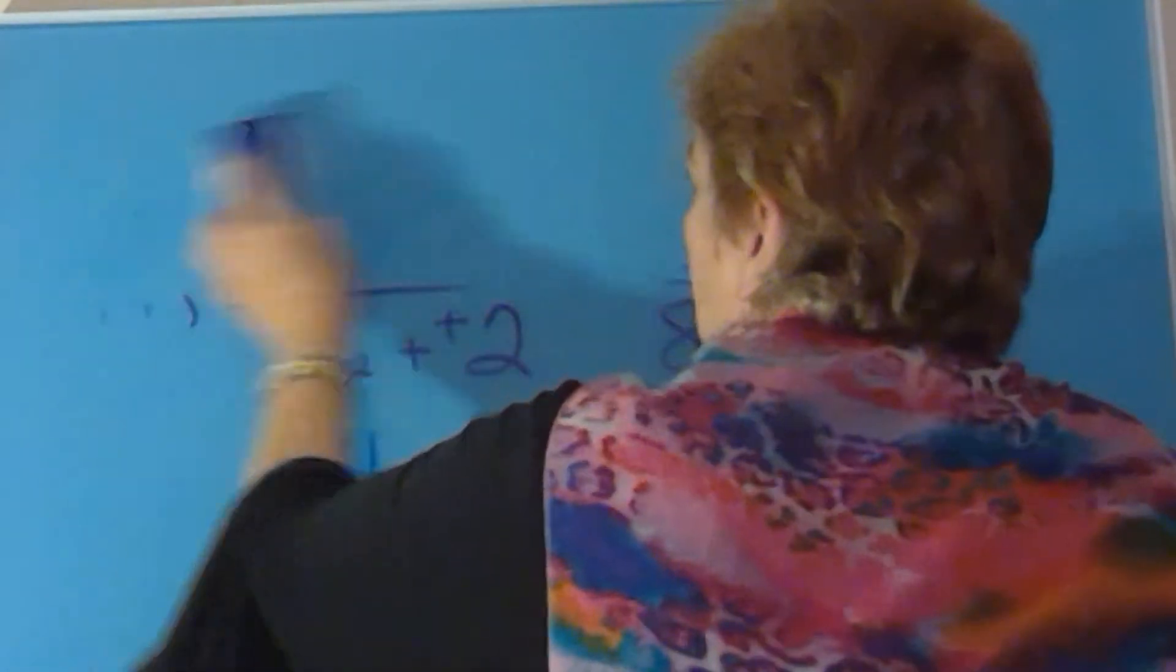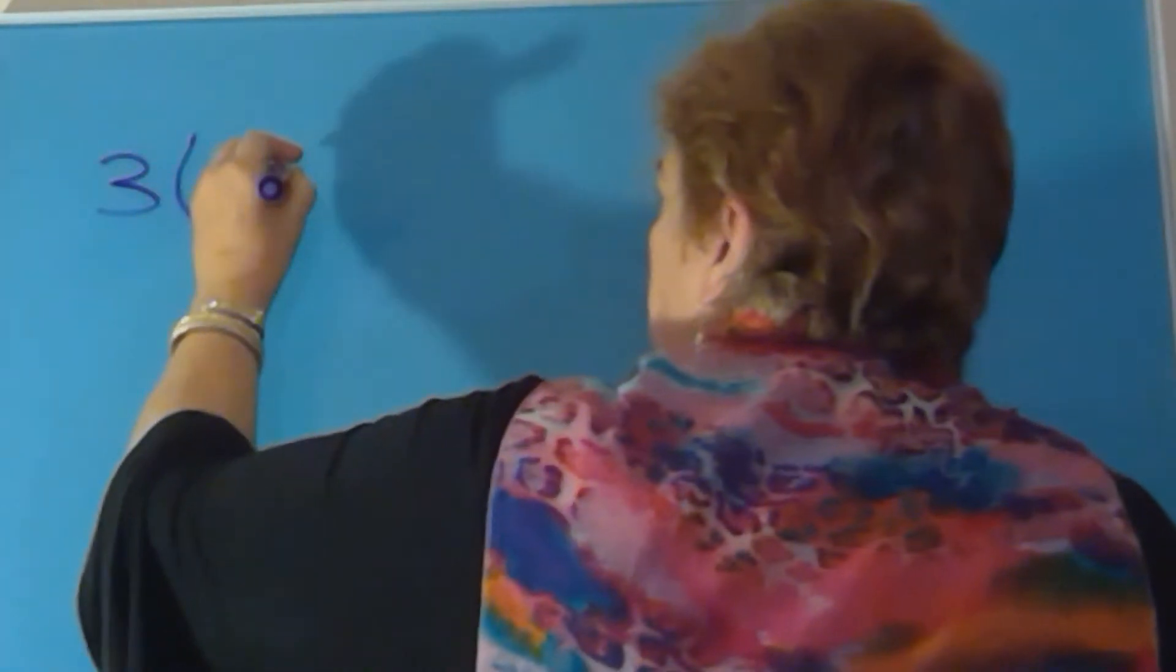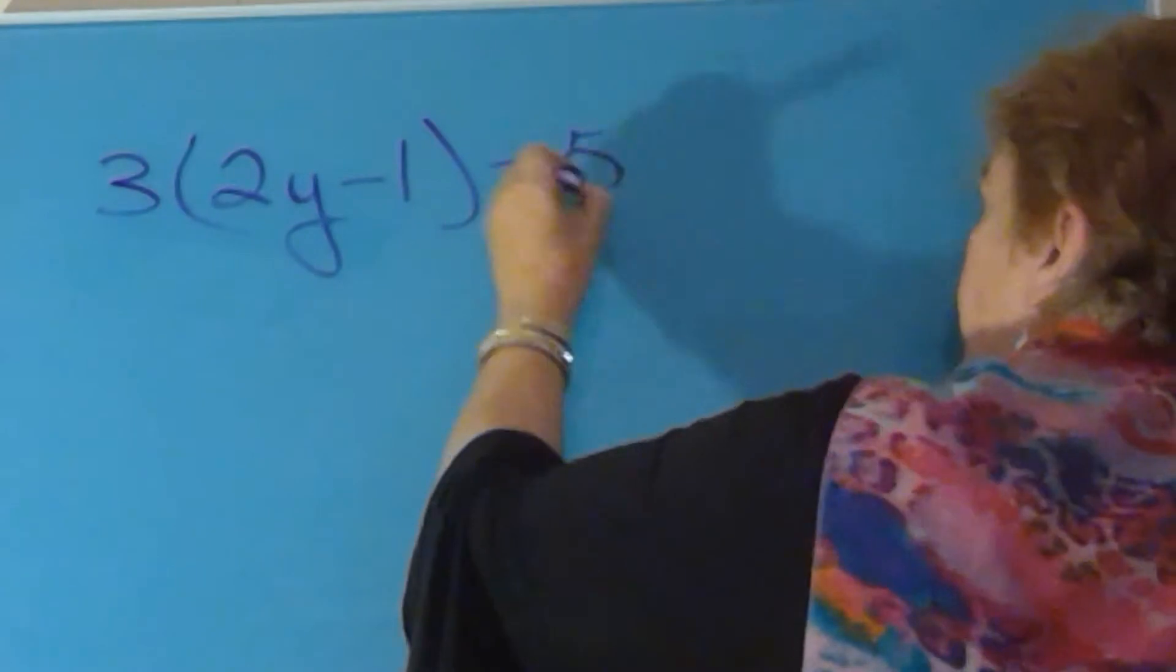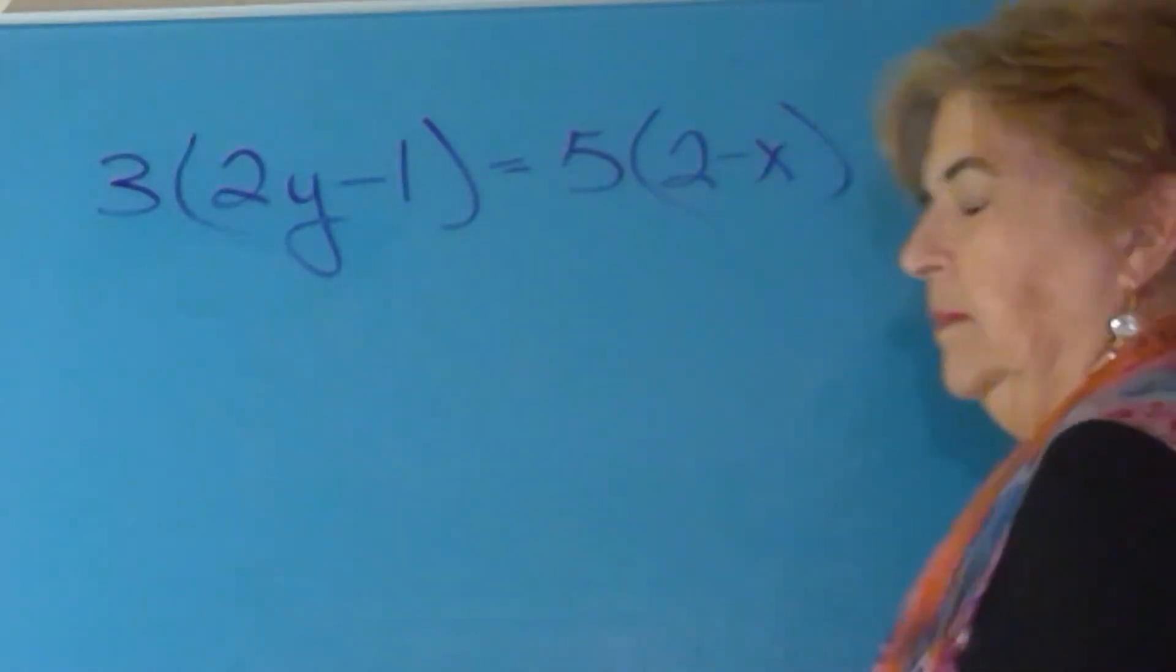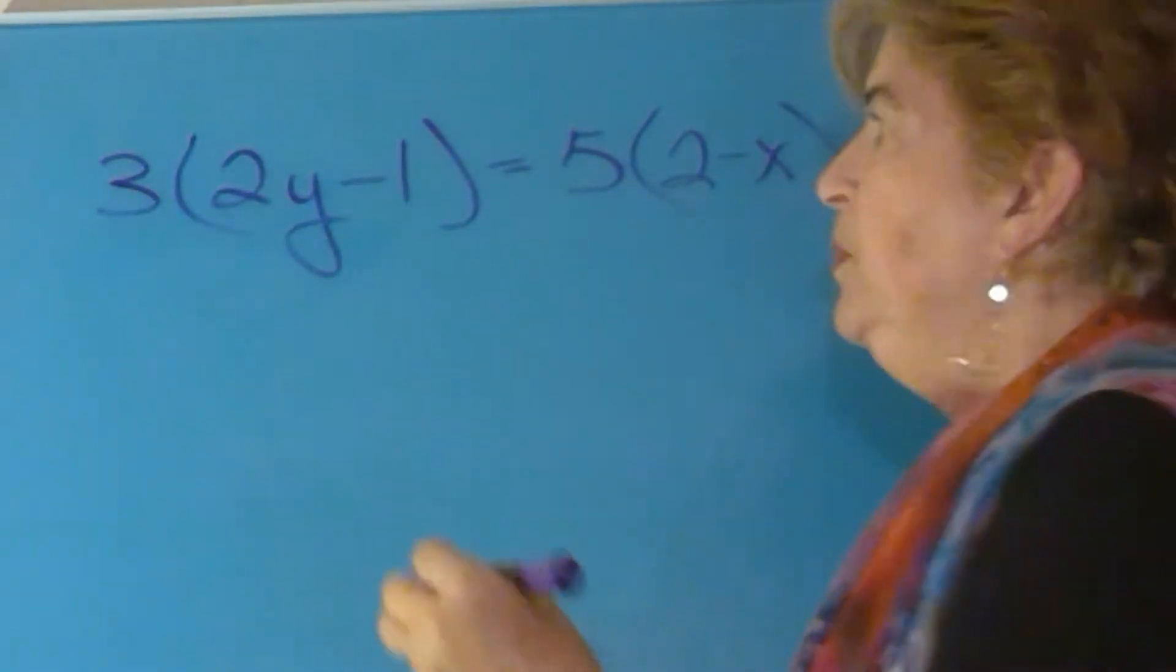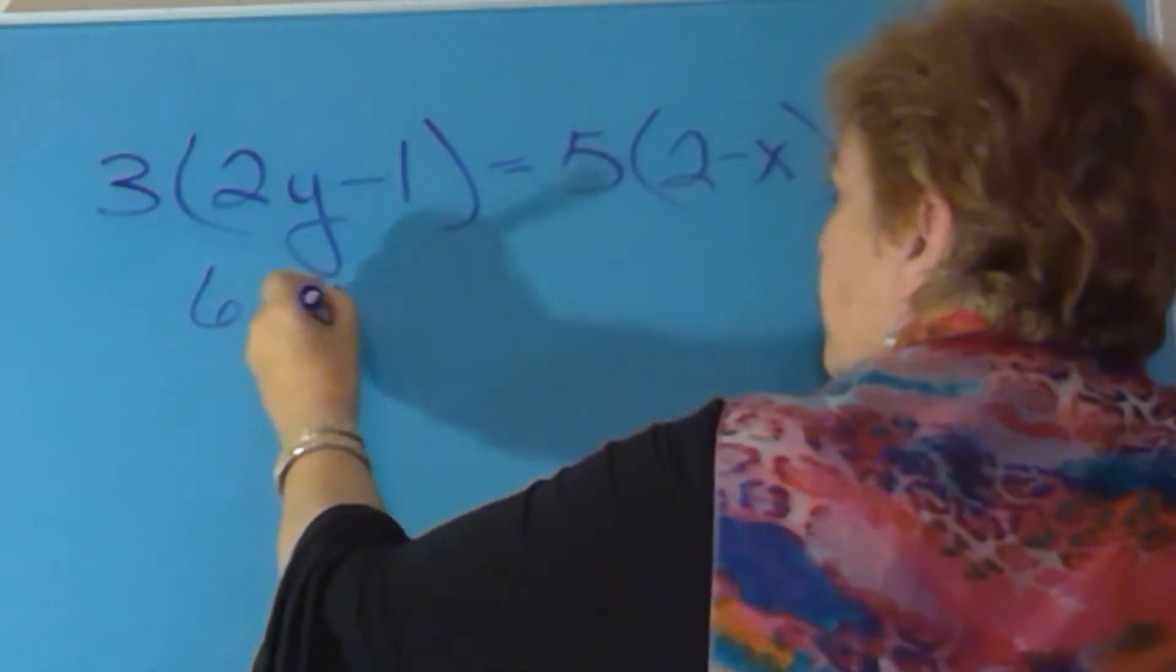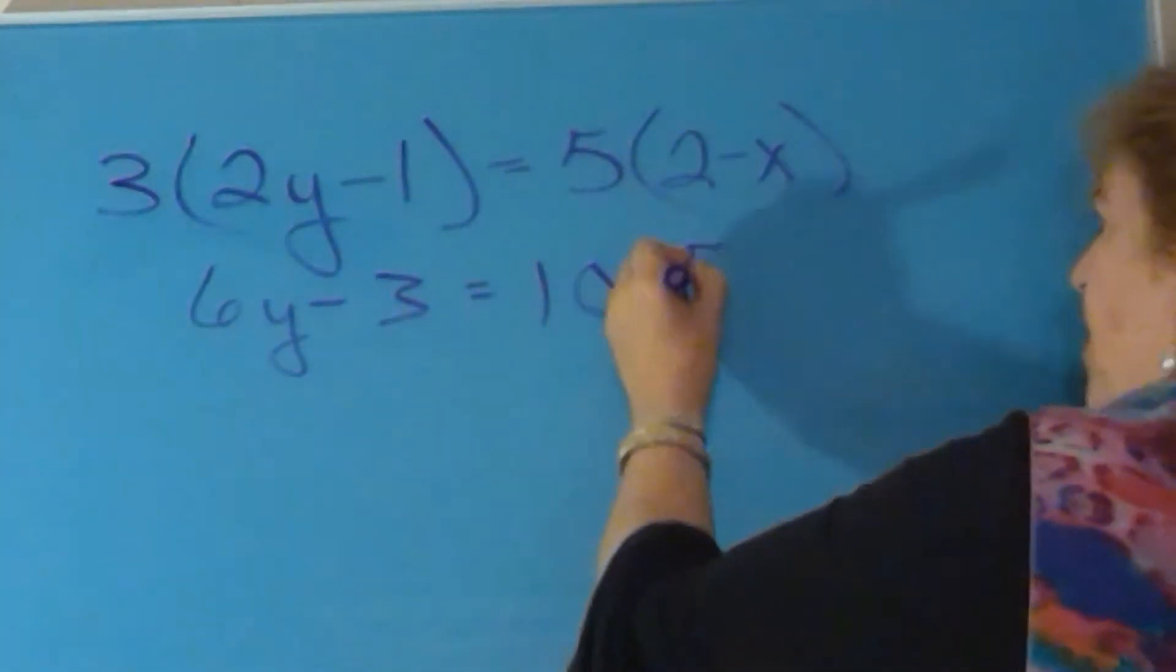For the second problem, you were given a line and asked to find the slope of the line. So the line that you were given was three times two y minus one. That was equal to five times two minus x. So if you distribute, you end up with six y minus three equals ten minus five x.